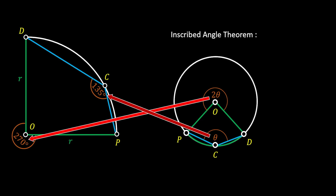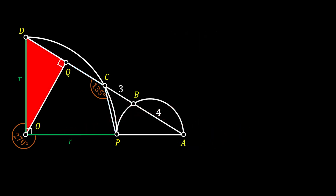With this in mind, we go back to our original sketch. We can conclude that the angle of 135 degrees and the acute angle at point C are supplementary angles. That means the acute angle at point C must be equal to 45 degrees.